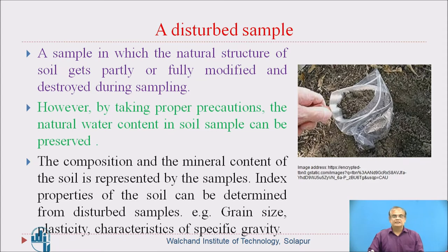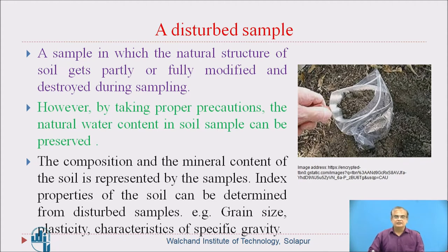The natural moisture content will get disturbed in this particular sampling methodology. However, by taking proper precautions, the natural water content in the soil sample can be preserved. The composition and mineral content of the soil is represented by the samples. Index properties of the soil — such as grain size, plasticity, and specific gravity — can be determined from disturbed samples.